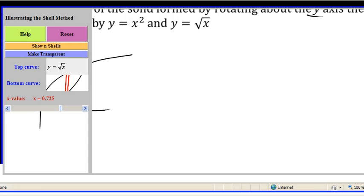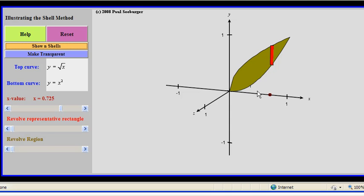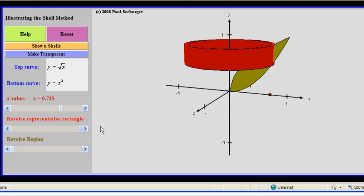To get an idea of what happens here, there's our curves, there's our slice. If we start revolving it, notice we get a different shape than before. Before we got a flat washer, here we're getting sort of a thin shell.